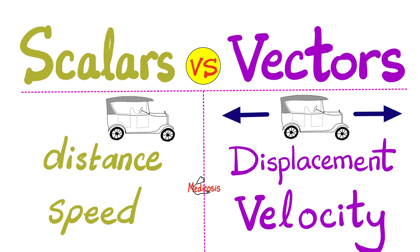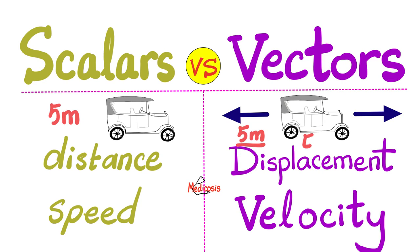For example, if I say that I drove for 5 meters — that's just a magnitude, a quantity. There is no east, west, up, or down. It's just 5 meters. So this is a scalar quantity known as distance. But what if I told you that I drove 5 meters east? Now we're talking. It's 5 meters, so that's the magnitude, and east is the direction.